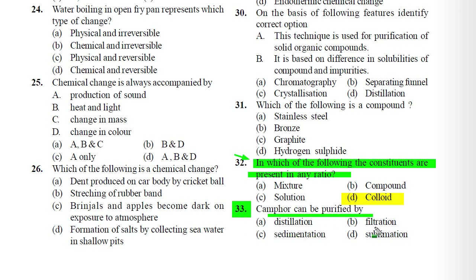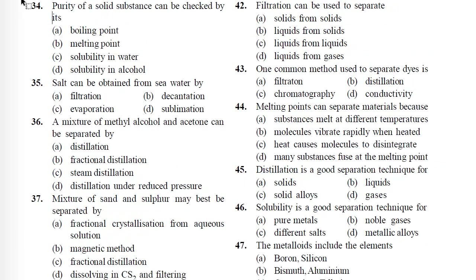Question 33: Camphor can be purified by: A) Distillation, B) Filtration, C) Sedimentation, D) Sublimation. Correct answer is D) Sublimation, because camphor is a sublime substance and can be purified by sublimation.